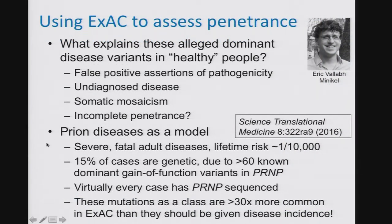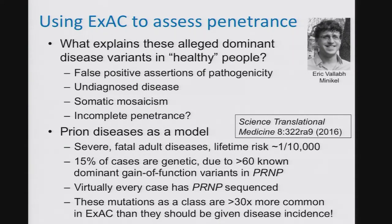To pick apart that last case, in work just published in Science Translational Medicine, we chose to use prion disease as a model. Prion diseases are severe, invariably fatal, adult-onset neurodegenerative diseases with a lifetime frequency of about one in 10,000. Approximately 15% are genetic, all due to dominant gain-of-function mutations in the PRNP gene, which encodes the prion protein. One benefit of studying prion disease is that virtually every case in the industrialized world is reported to a surveillance center and the PRNP gene is sequenced — because of the notorious 1% of prion disease cases that are infectious in origin.